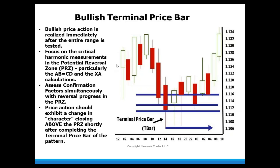When looking at HSI relative to a potential reversal zone, we're integrating this with the terminal price bar — the exact completion point of any pattern. We're looking for bullish price action to unfold immediately after that terminal price bar has materialized. We focus on the critical pattern measurements in the PRZ: the ABCD and XA calculations. We bring in confirmation factors like Harmonic Strength Index to simultaneously analyze the reversal progress. The price action should exhibit a change in character, closing above the PRZ shortly after forming the terminal bar.